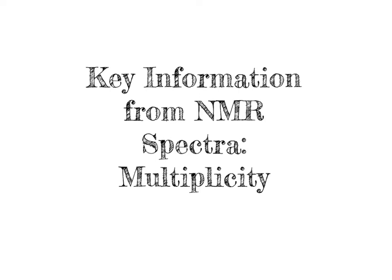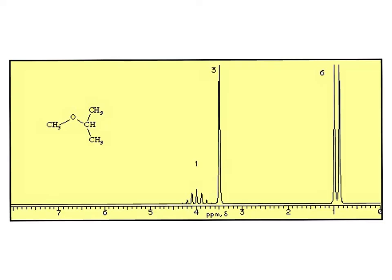By the end of this video, you should have an understanding of what exactly multiplicity is and what it indicates about the structure of a particular molecule. What I'm showing here is the proton NMR spectrum for the ether structure we see at the left-hand side of the screen. Based on our understanding of chemical shifts, we would expect this molecule to have three different chemical shifts: one for the CH3 group protons highlighted in pink, another for the single hydrogen shown here, and a third for both sets of CH3 groups.